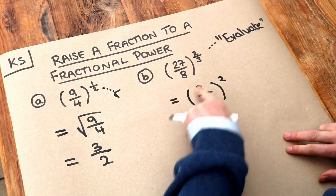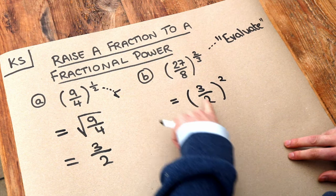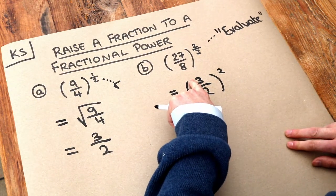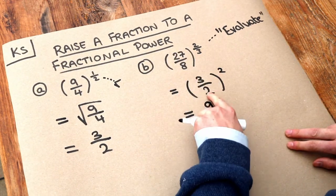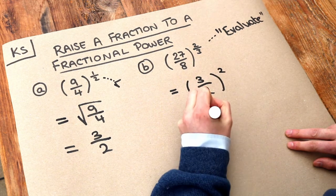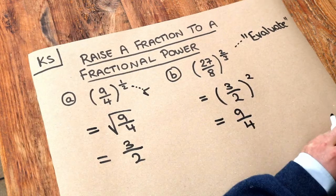And then, well if we want to do this fraction squared, we just square the top, square the bottom. So if we square the numerator, 3 squared is 9. And if we square the denominator, 2 squared is equal to 4. And that's the final answer.